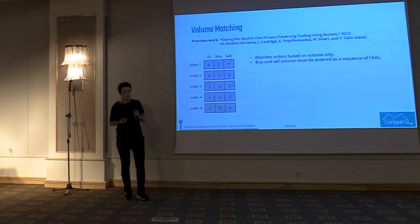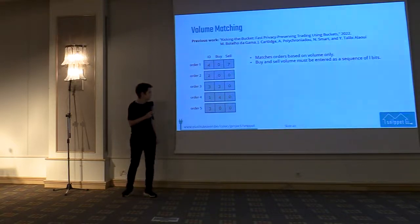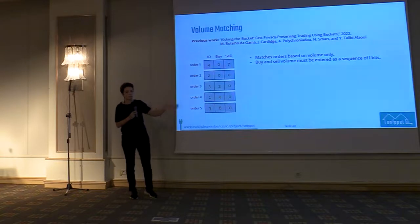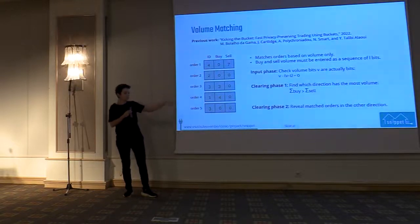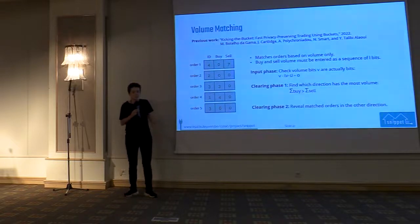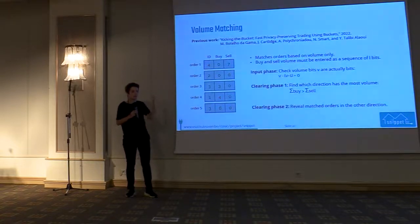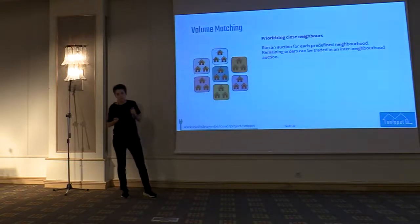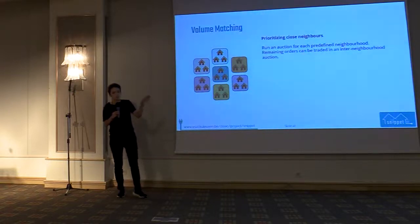The next algorithm, volume matching, is faster and simpler because it does not use prices. The price is taken from some external reference market and users decide how much volume they want to trade for that price, so they only send secret shares for their IDs and buy and sell volumes. Essentially we need to see which direction has more total volume — buy or sell. For the direction with least total volume, all volume will be traded. To prioritize closer neighbors, we take the population, divide it into several areas, and perform one auction in each area.